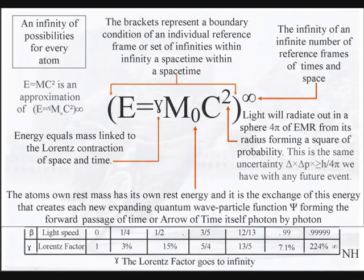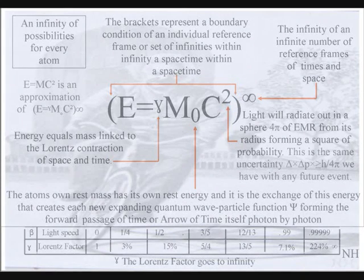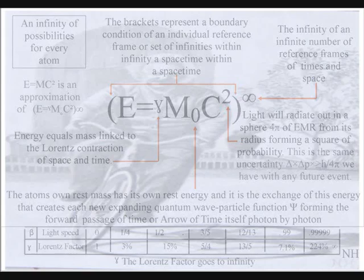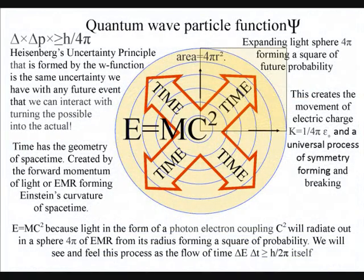All we have to do is place the Lorentz contraction of space and time between the energy and mass. Therefore, the greater the energy, the greater the contraction of space and the slower time will run. Mass will increase relative to this, and each reference frame can be seen as a vortex in space and time. The c² in the equation represents light radiating out in all directions at a constant speed, forming a sphere of electromagnetic radiation.